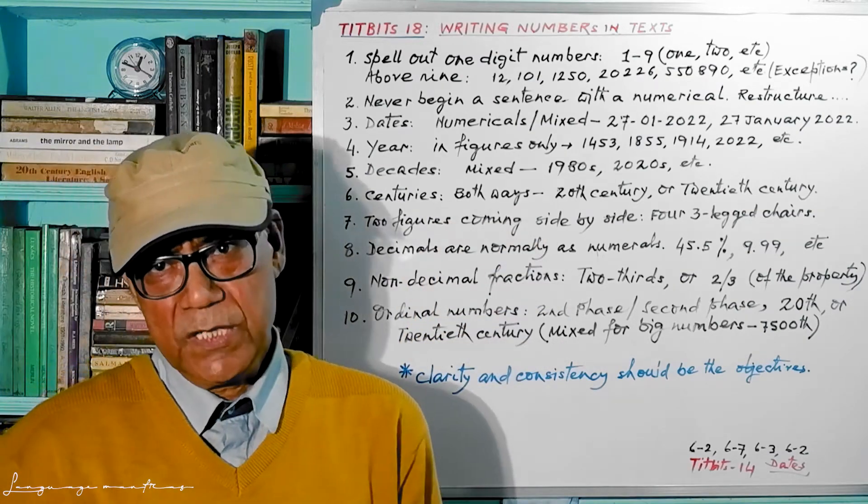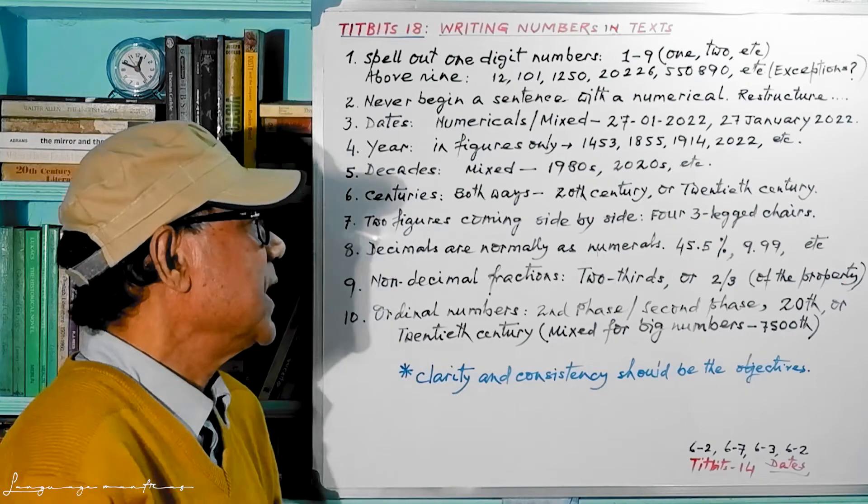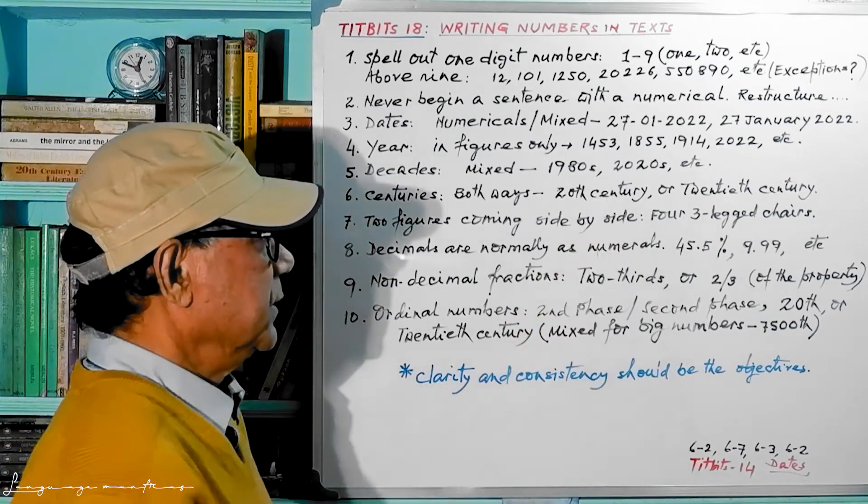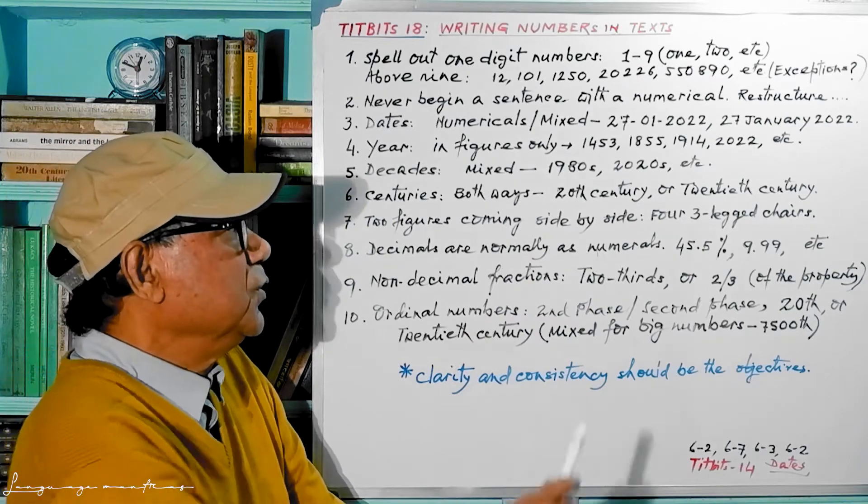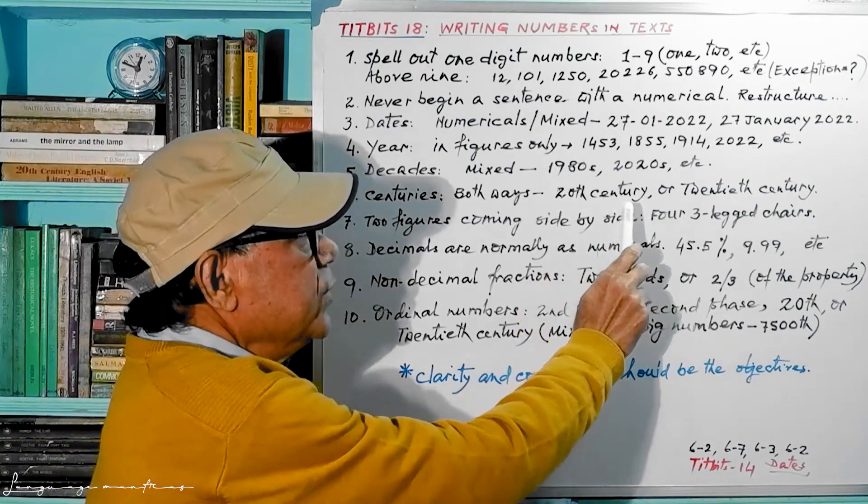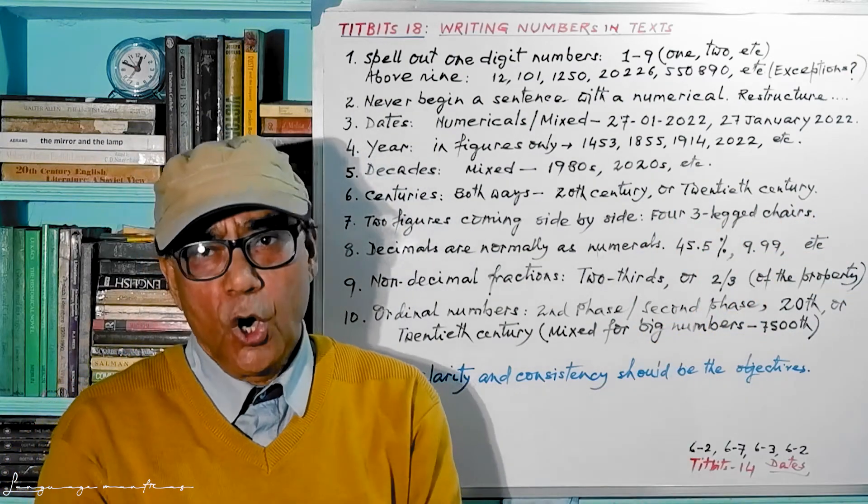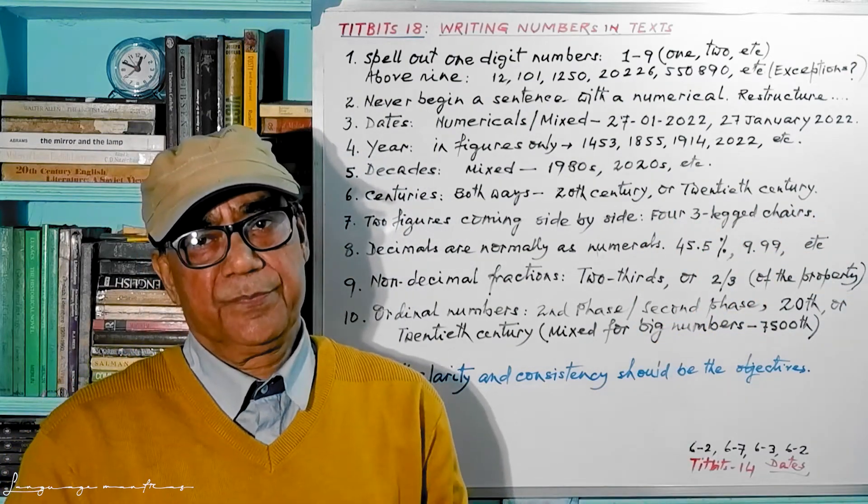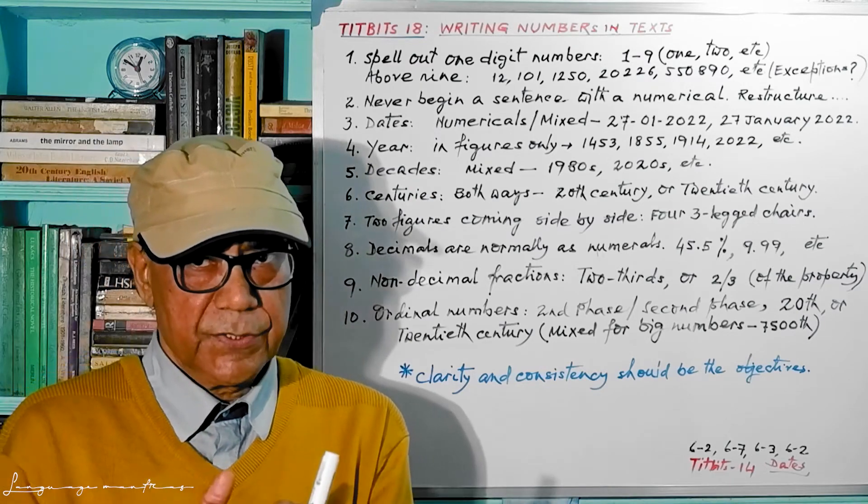Now come to the next point: centuries. Centuries means 100 years together. You have two options: either 20th century like this, 20th century, 20th and 'th' then century in word, or 20th century all in words.